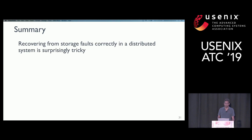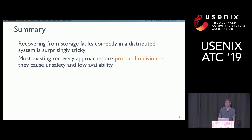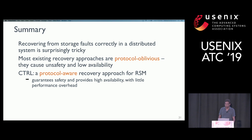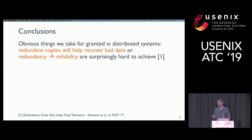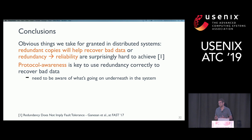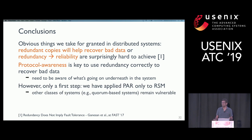To summarize: recovering from storage faults in distributed systems is surprisingly tricky. Most existing recovery approaches are protocol-oblivious and lead to problems. Protocol-aware recovery, exemplified by control — an implementation for RSM-based systems — guarantees safety and high availability in the presence of storage faults at little performance overhead. More broadly, even seemingly obvious assumptions — like redundant copies enabling recovery from bad data — are surprisingly hard to realize in practice. Protocol awareness is a key idea for effectively using redundancy to recover from storage faults. This work is a first step, as similar problems exist in other classes of systems.